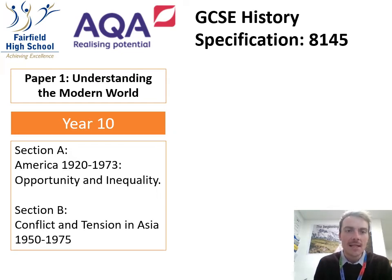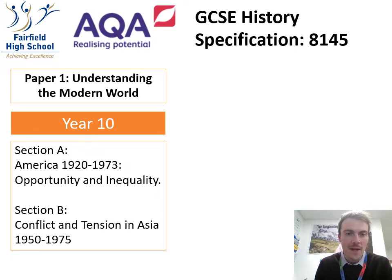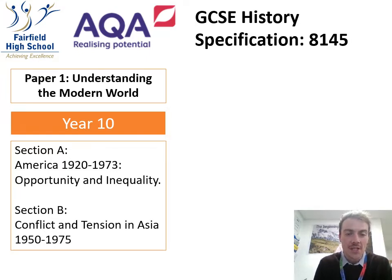Paper one is called Understanding the Modern World. We study the content for that in year 10. There are two sections. We begin in America in 1920 and our study goes all the way until 1973. Section B is called Conflict and Tension in Asia, which is a study of the Korean War and then the Vietnam War as well.